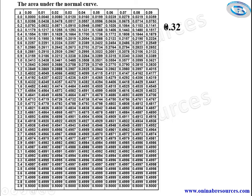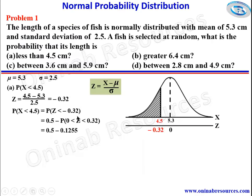We now look up the table. 0.32 equals 0.3 plus 0.02, so we find the row 0.3 and column 0.02. The intersection gives 0.1255. So we have 0.5 minus 0.1255, which gives 0.3745. Expressed as a percentage, that is 37.45%. That's all for part A.